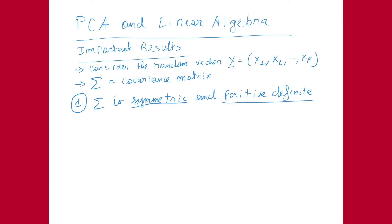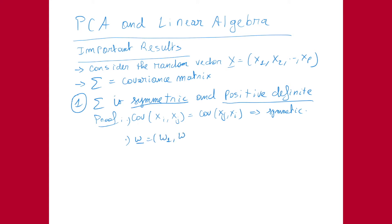For the proof of symmetry: the covariance of Xi and Xj is equal to the covariance of Xj and Xi, and that proves symmetry. For positive definiteness, it means that if I multiply my matrix Sigma with some vector W — where W is the vector w1, w2, all the way to wP — then what we need is that W times Sigma times W-transpose is always positive.